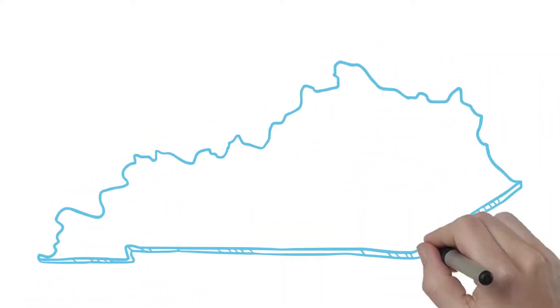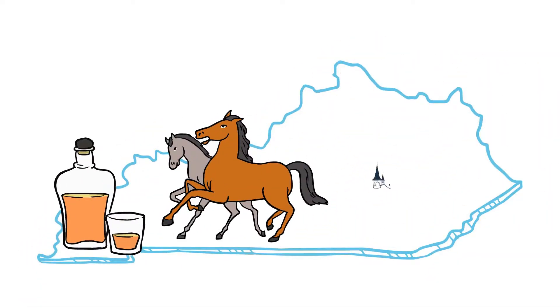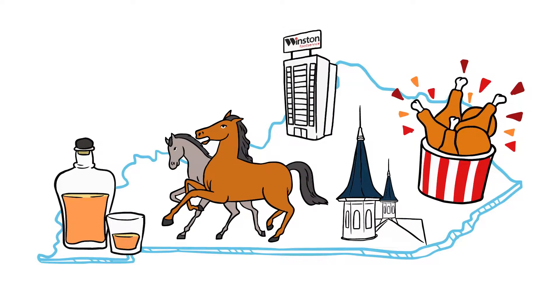Kentucky is known for lots of things: horse racing, bourbon, and the most finger licking good chicken on the planet.